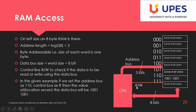With the read signal, the data 10011001 is copied to the data bus and transferred to the CPU. For writing, you set the address bus accordingly, load the data onto the data bus, and send the write signal on the control bus — that data is then written to that particular memory cell.